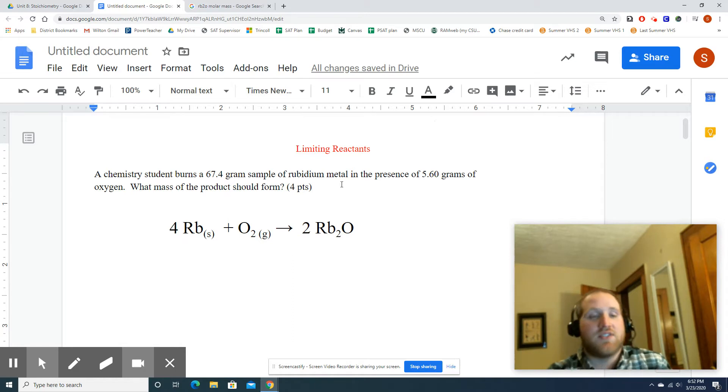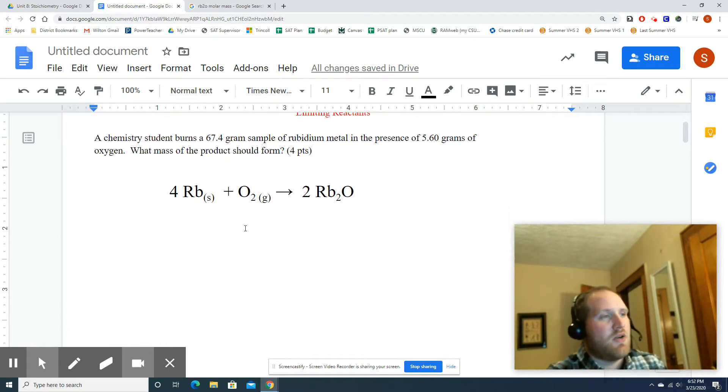That's called the limiting reactant, because you're limited by how much of that one you have. Your excess reactant is the other one. It's going to be the one that you have more than enough of. So when it comes to solving something in the problem, like in this case I'm looking for the mass of product, you have to base that off the limiting reactant, not the excess reactant.